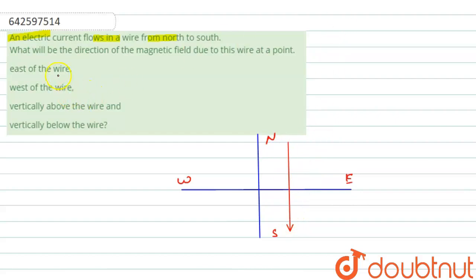And we have to find the magnetic field due to the wire in the east of the wire. So, in the east of the wire, with the help of right hand thumb rule, we find that the magnetic field is upward in this side and west of the wire.